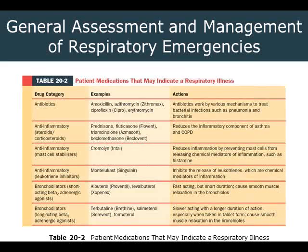One of the toughest parts of advanced EMS is being able to relate certain medications to a category and then knowing what that's generally for. Antibiotics is one of the largest drug categories out there — anything from penicillin, amoxicillin, azithromycin, ciprofloxacin, erythromycin, to vancomycin; everything from sulfa drugs to penicillin-based. Antibiotics are used to treat bacterial infections — pneumonias, bronchitises, upper respiratory tract infections, and sinus infections.